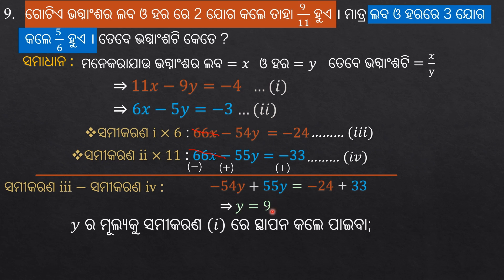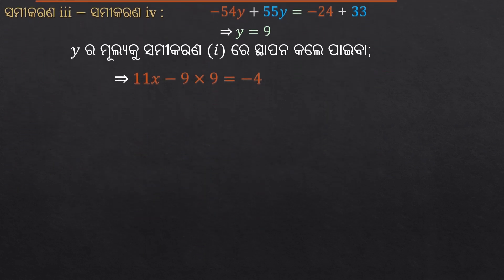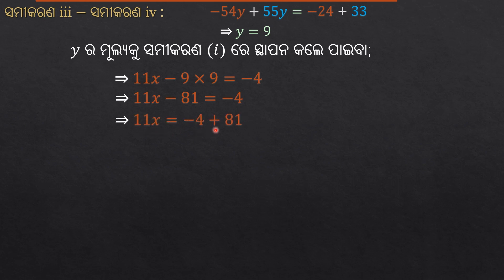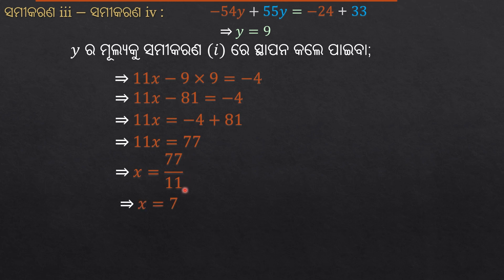Now substituting y equals 9 back into equation 1: 11x minus 9 multiplied by 9 is equal to minus 4. So 11x minus 81 equals minus 4, giving 11x equals 77, therefore x equals 77 divided by 11, which is 7.